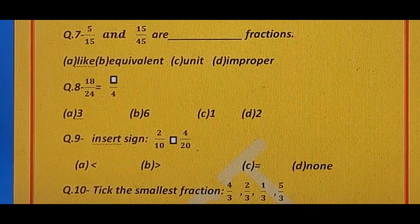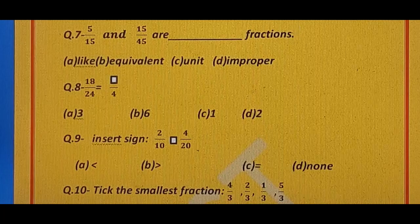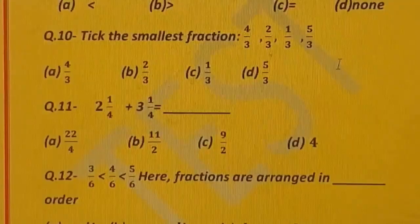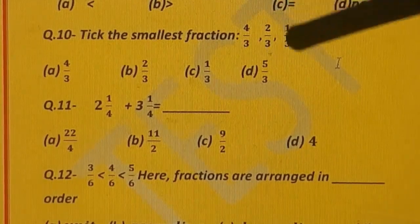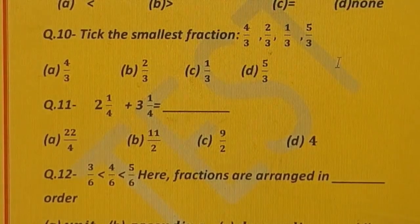Question number 10. Pick the smallest fraction from: 4 upon 3, 2 upon 3, 1 upon 3, 5 upon 3. You have to tell that smallest fraction. Options are: A) 4 upon 3, B) 2 upon 3, C) 1 upon 3, and D) 5 upon 3.